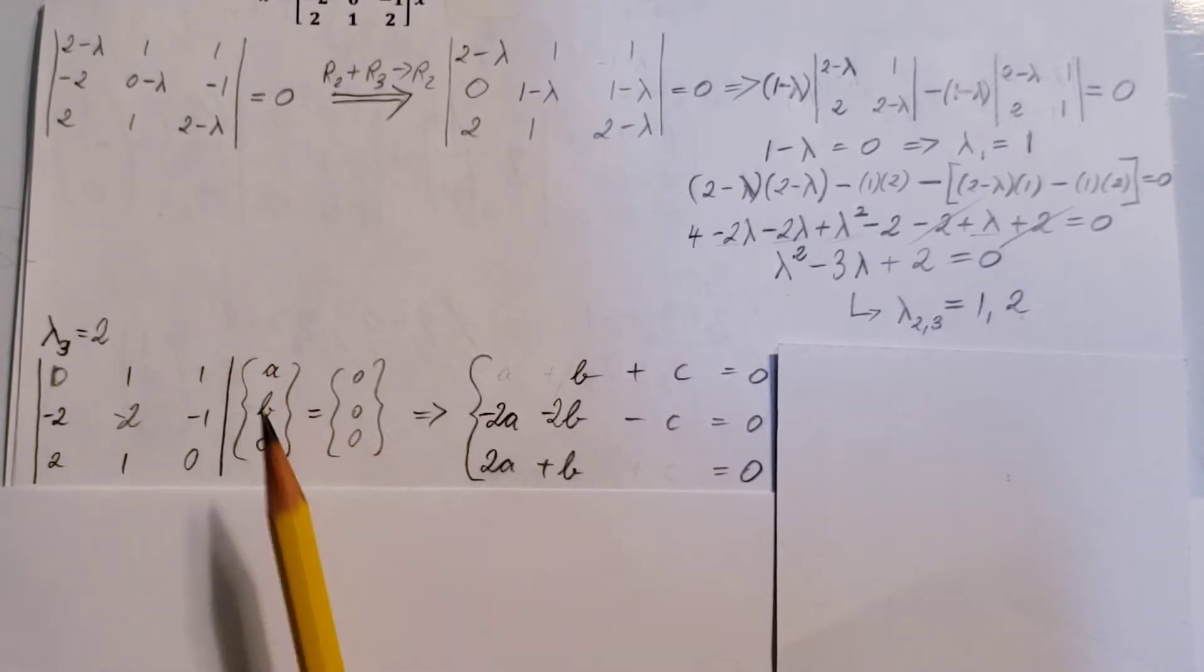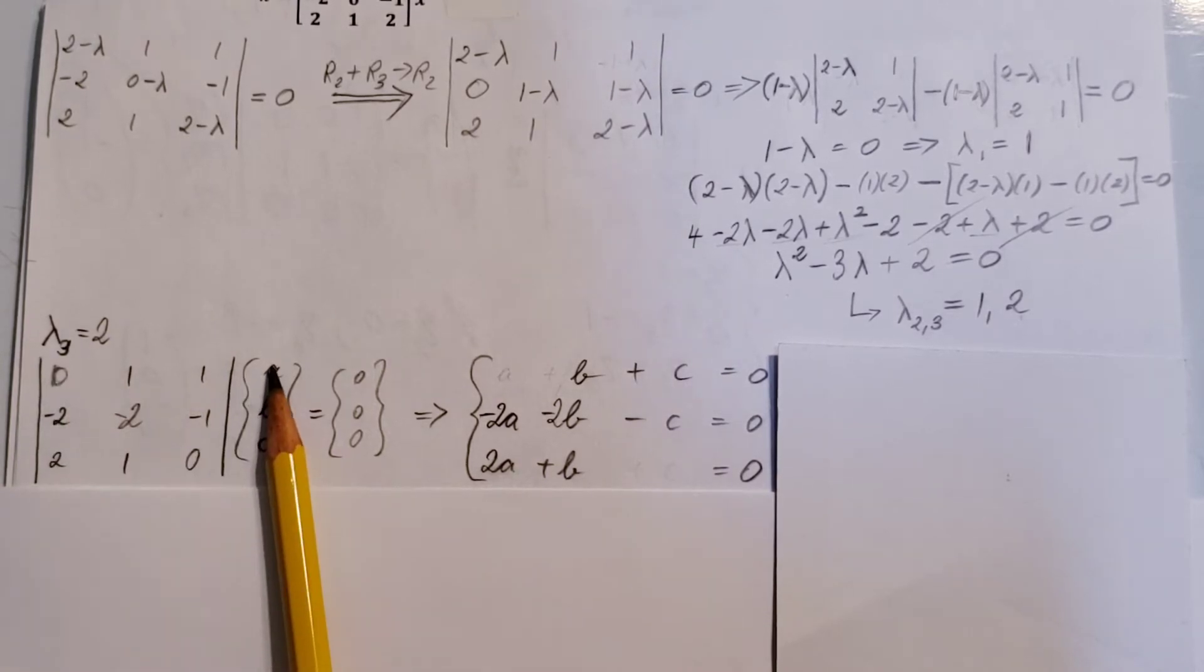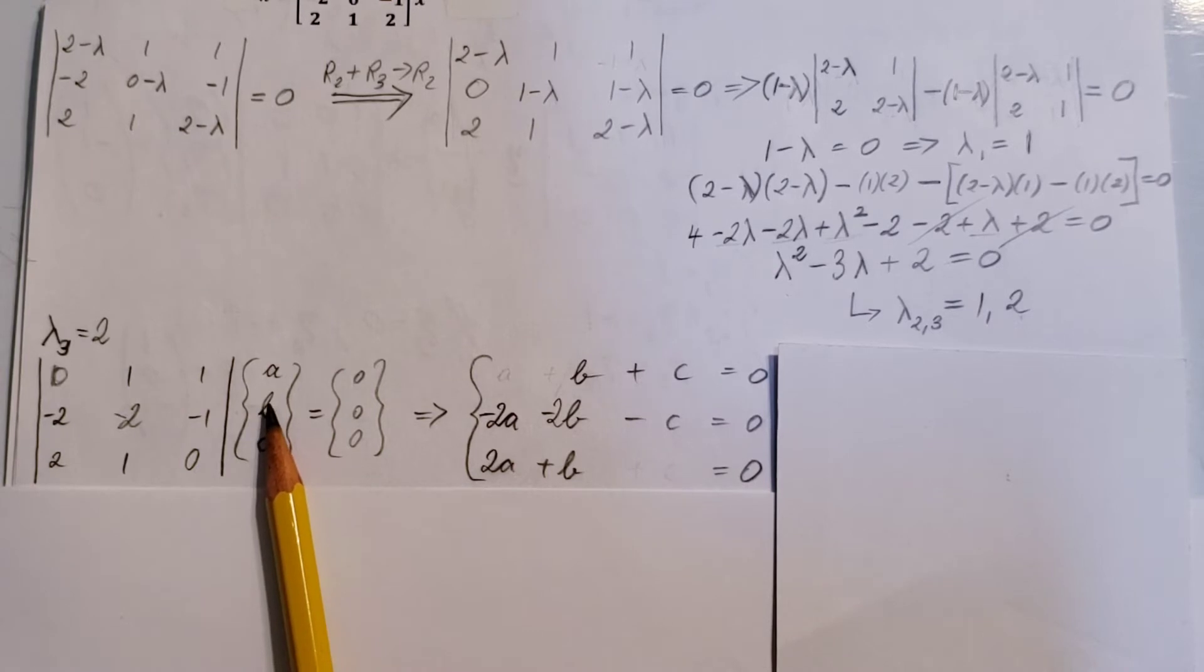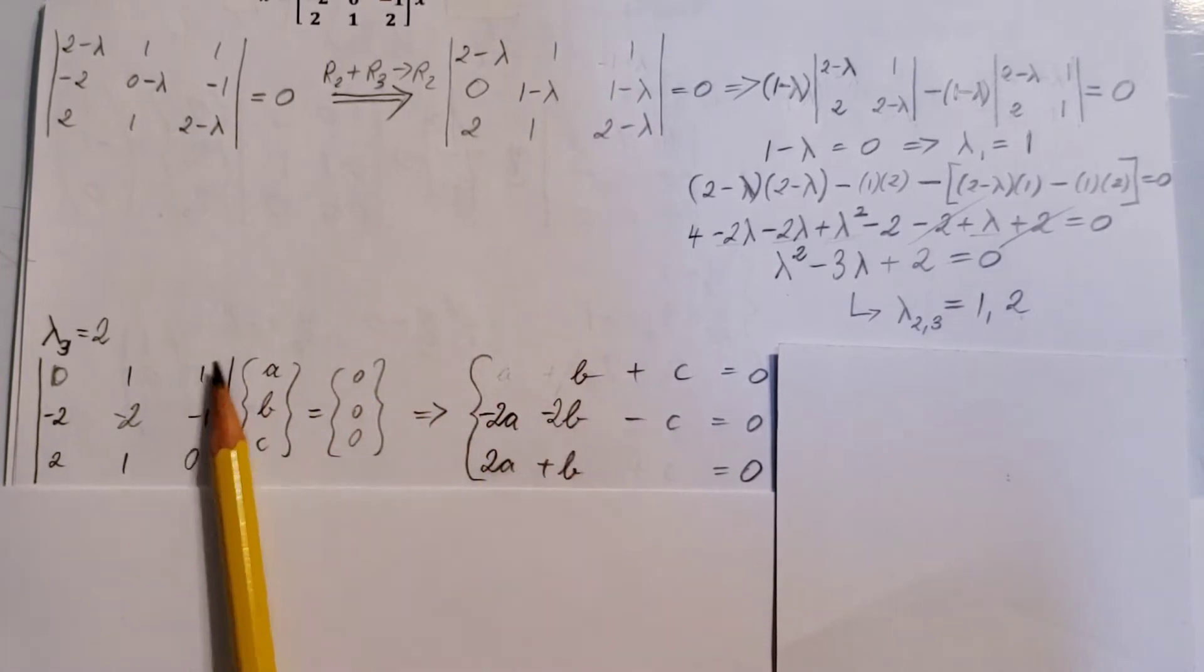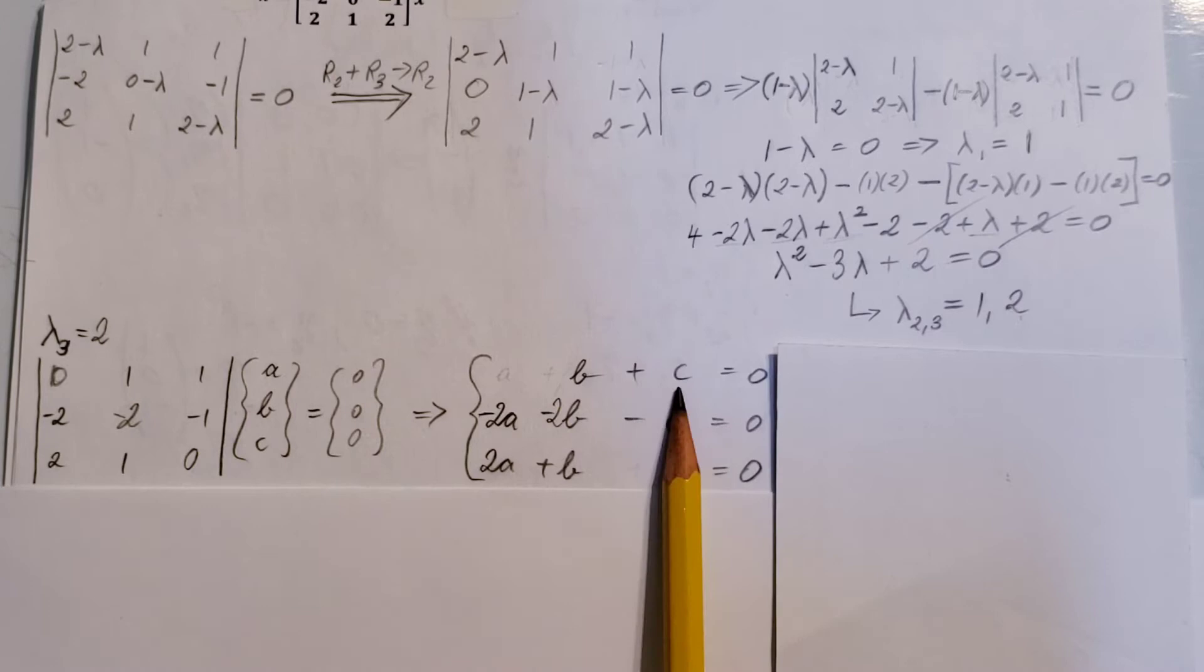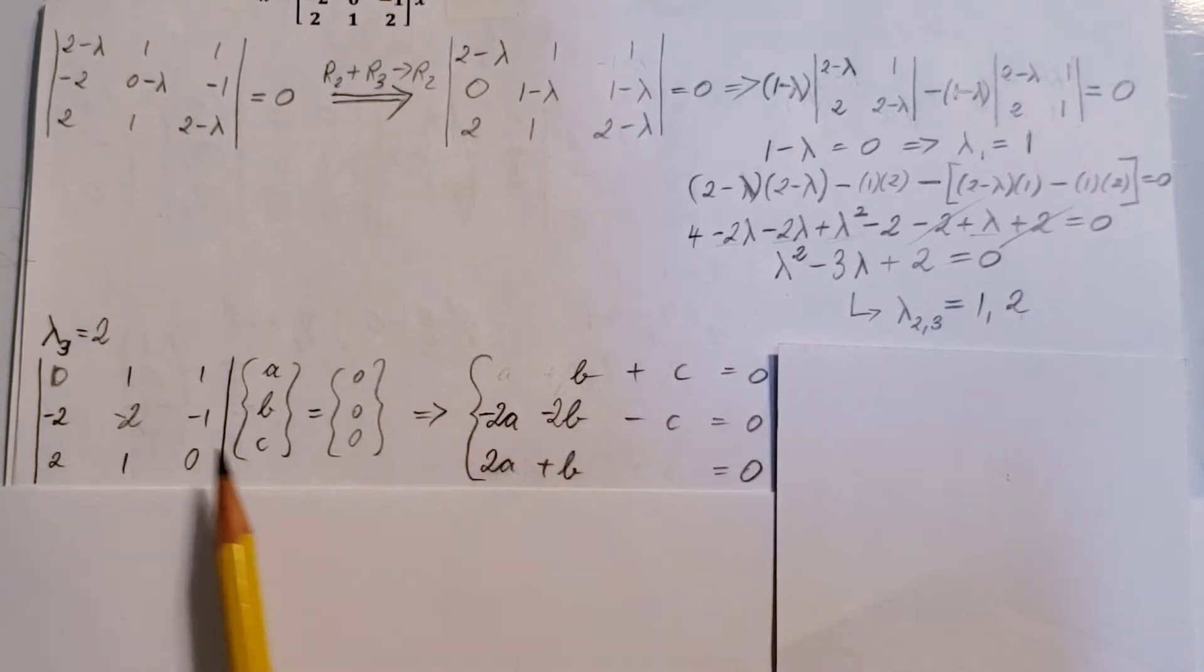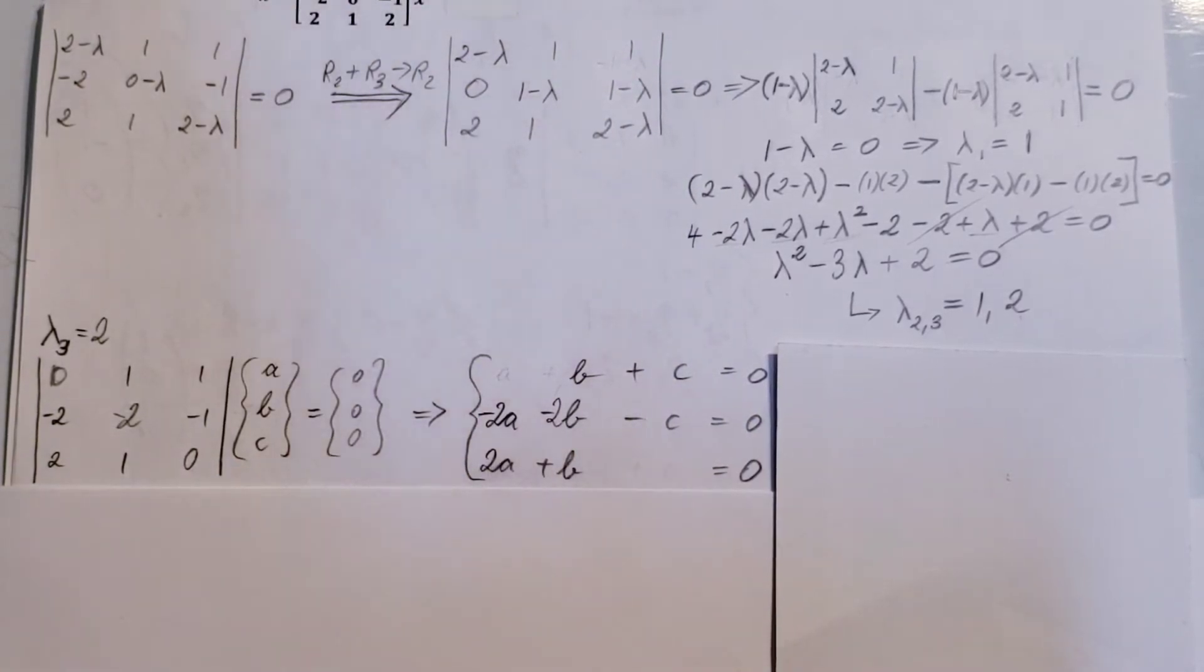Transform this into equations. This times this comes here. This times this comes here. Plus this times this comes here. Plus this times this comes here. And equal to 0. Likewise, we're gonna go through second and the third line. They will form these three equations for us.